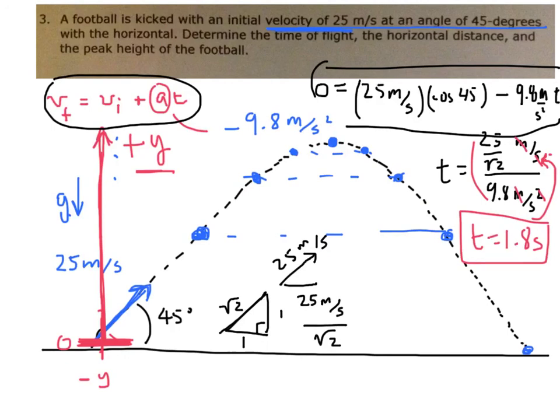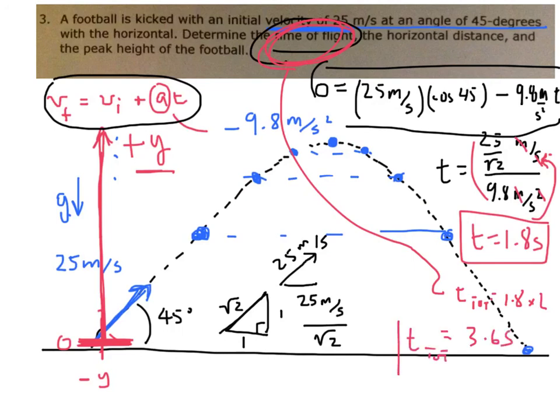So time equals 1.8 seconds, and that is the time to get from the initial point here to the top. The total time of flight is double that because it takes an additional 1.8 seconds to get from here to here. The time of flight total is 1.8 times 2, or 3.6 seconds equals t total. How many significant figures did I have at the start? I had two in the 25, so I still have two here - 3.6, so I'm pretty good.